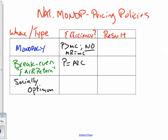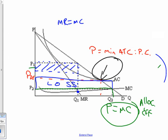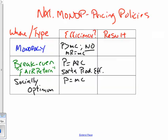From the break-even pricing we get some level of productive efficiency — sort of productively efficient, close to it. For the socially optimum price, the government forces the firm to produce where P equals MC, setting a maximum price to maximize the quantity available to society. This makes it definitely allocatively efficient.